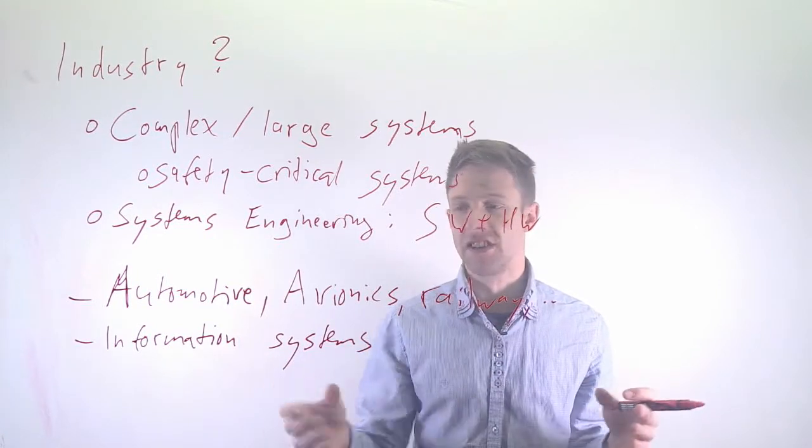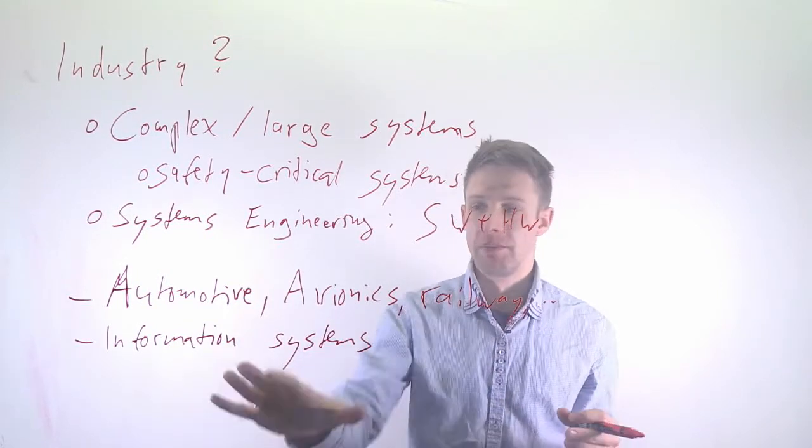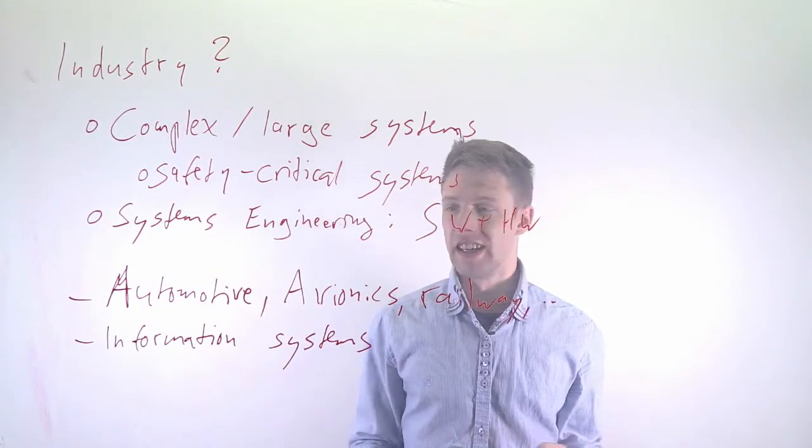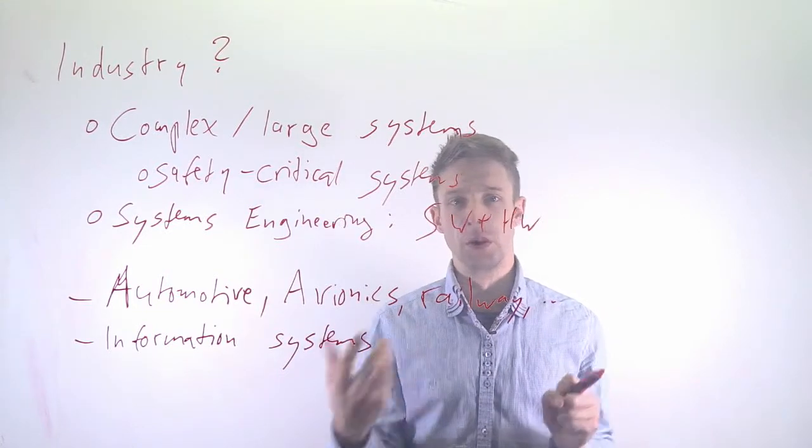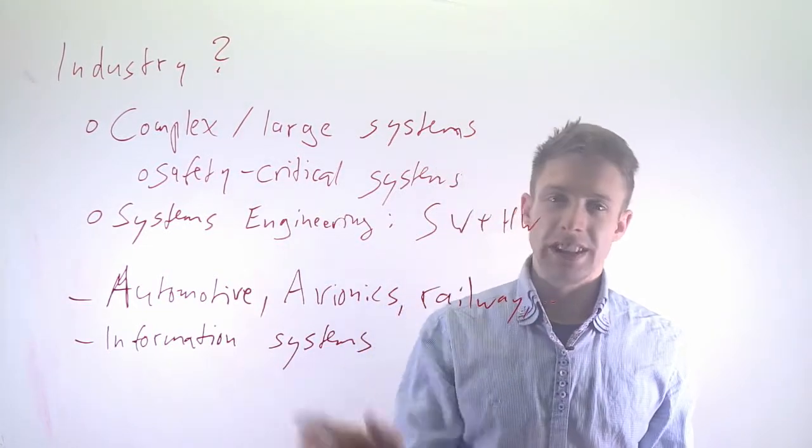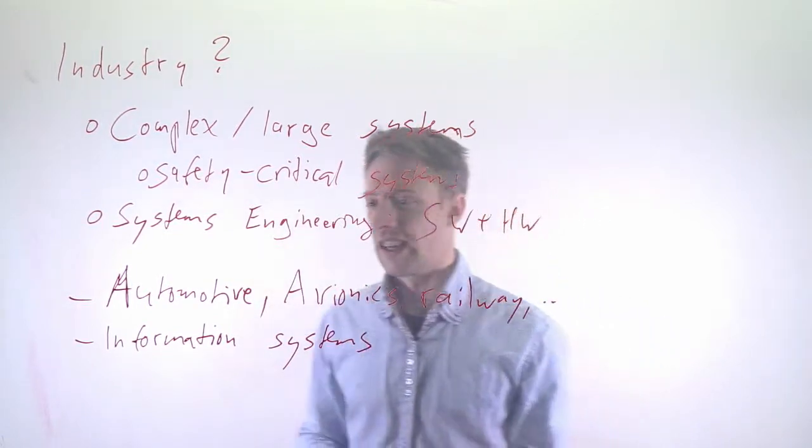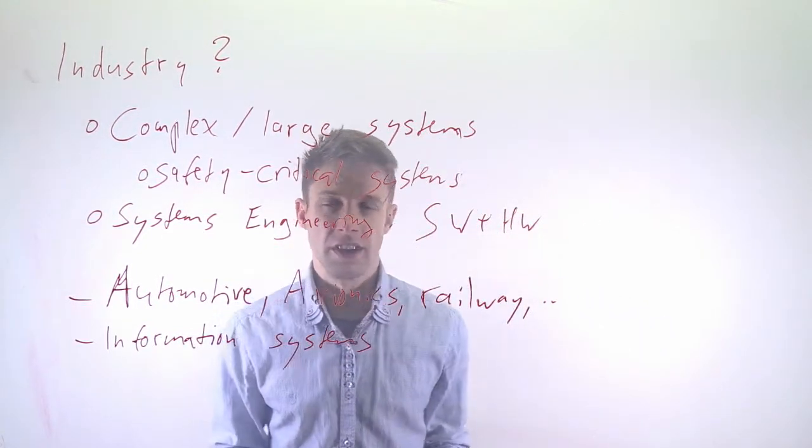And that usually depends on some kind of information model in the background. So it's not uncommon there to use model-based engineering because the system itself you can very often generate based on the underlying information model and maybe some kind of rules. But you don't need to rewrite it for every single case. So here we also see the use of models.